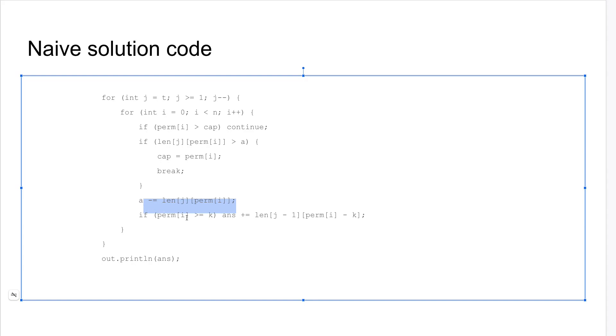Otherwise, we subtract the length, and then we add the number of times k appears in this subpermutation to our answer. And then we just print the answer. So this is kind of the naive solution.